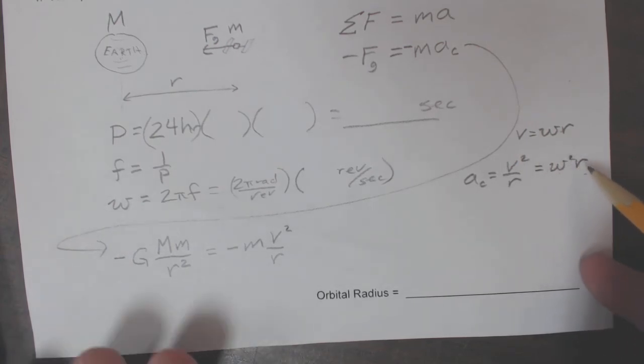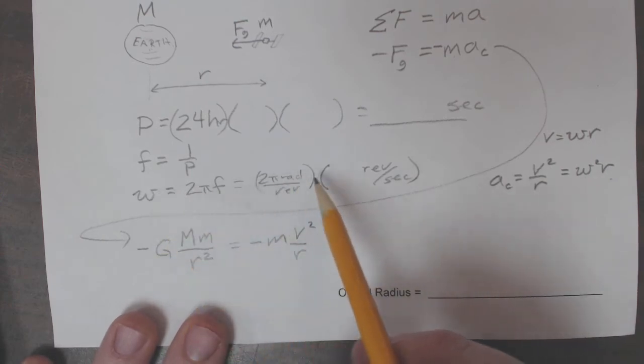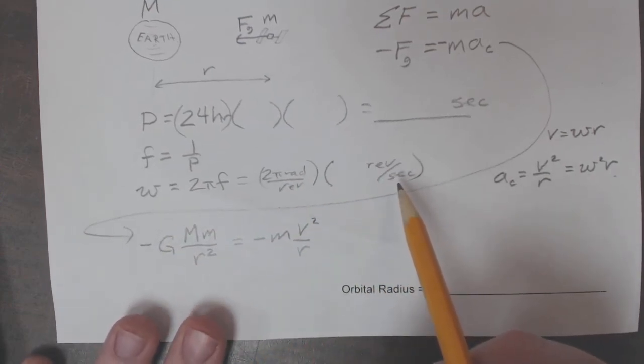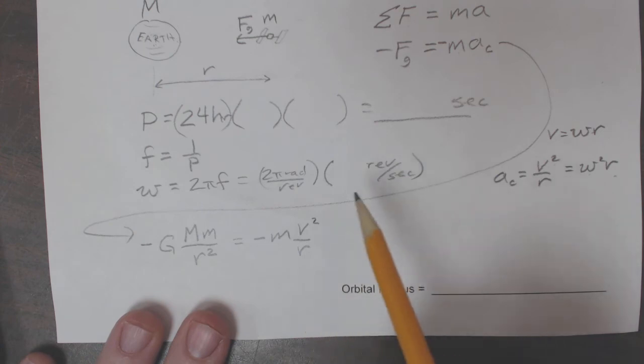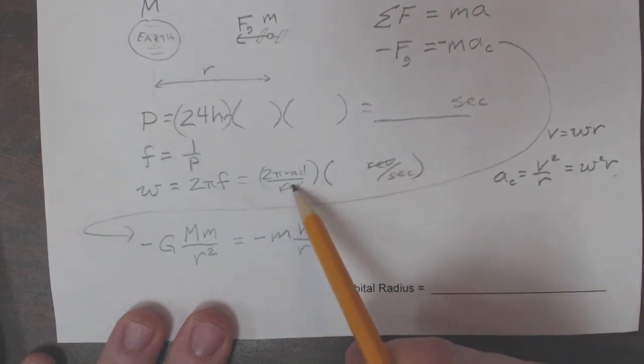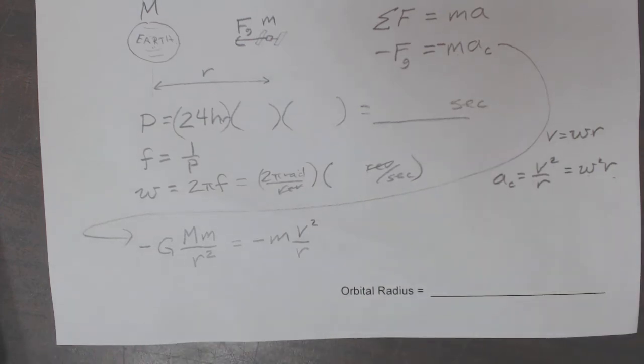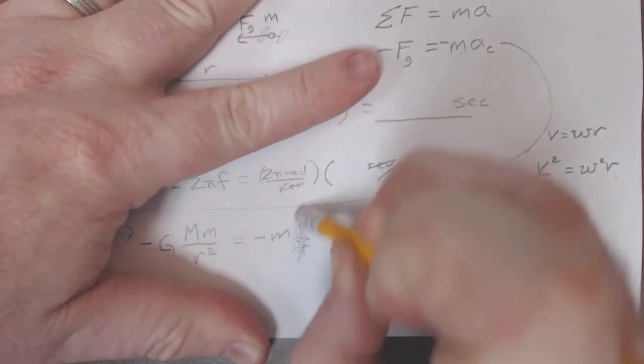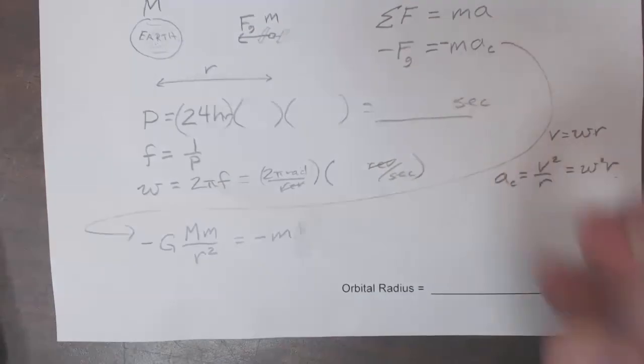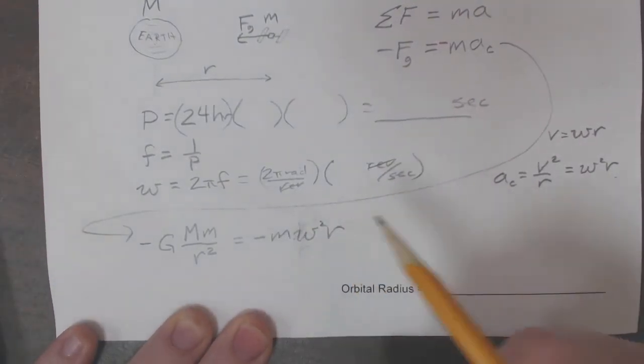Now why did I go and do that? Well because we have just found out what the angular velocity is in radians per second. Because remember, these revs right here will cancel out, and you'll get it in radians per second. So I'm going to erase this and write the other form of centripetal acceleration, and that's ω squared r.